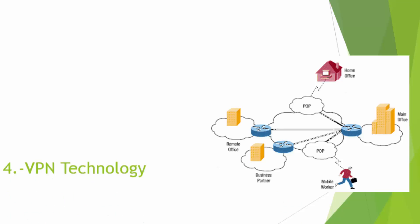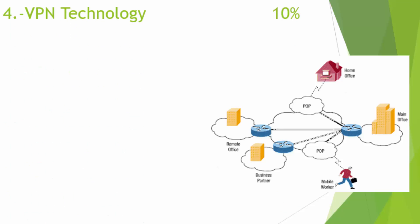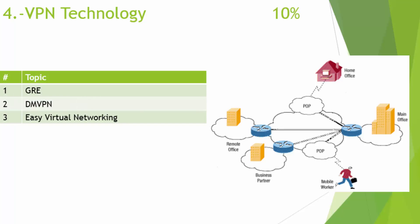Now we are going to be talking about VPN — Virtual Private Network. We're going to talk about GRE, DMVPN, and Easy Virtual Networking, and how that works — especially when you want to have direct communication, for example when you are at home, on the road, or in another city, and you need that VPN technology working for you properly.